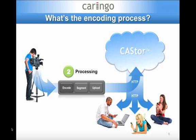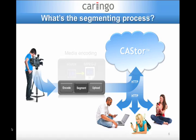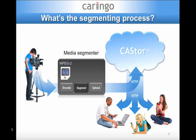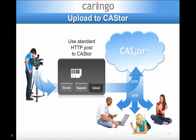Let's take a closer look at how the video is processed. The encoding software takes the original audio and video source and formats it as an MPEG-2 transport stream. Apple's Media Stream Segmenter takes the encoded MPEG-2 file and divides it up into a series of small video streams. The segmenter also creates and maintains a playlist of all the streams in the video. Upload your content using a standard HTTP POST to Castor, and that's all there is to it.